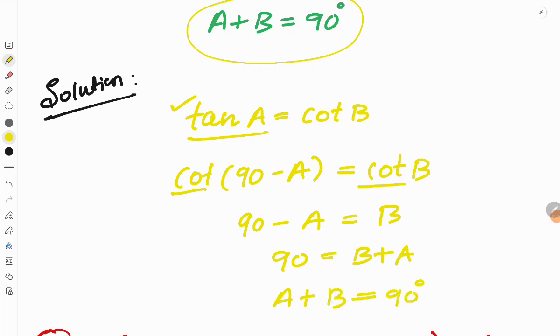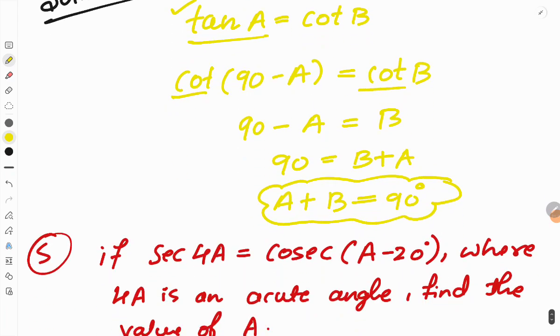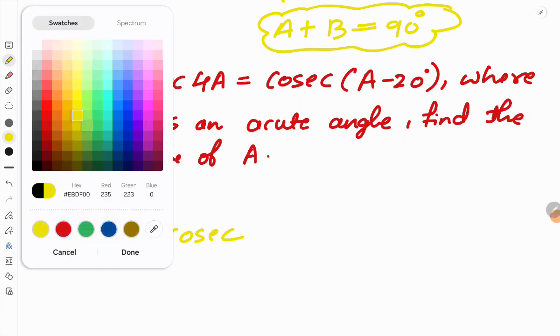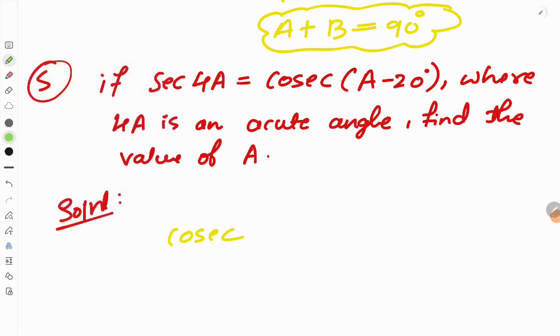That's the solution to the fourth problem. Now the next fifth question: if sec 4A equals cosec of A minus 20 degrees, where 4A is an acute angle, find the value of A.